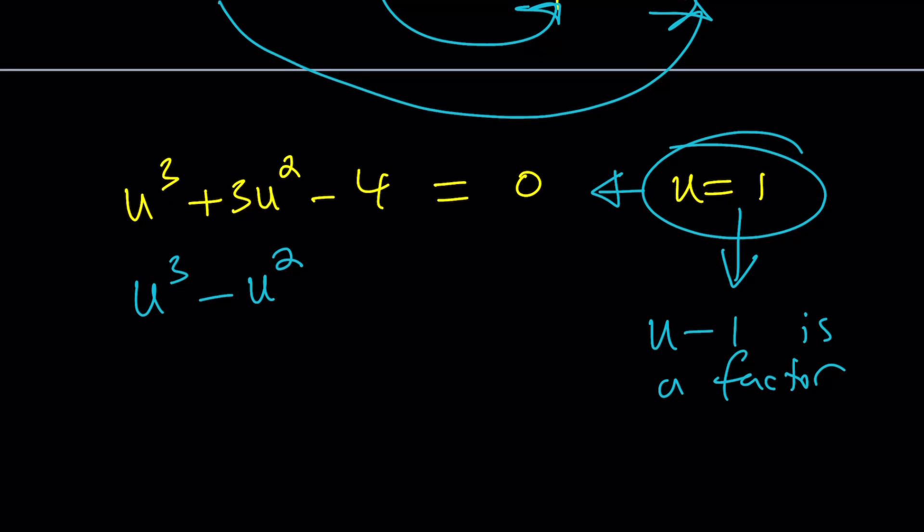u cubed is followed by 3u squared, but I want it to be followed by minus u squared, because in this case I can factor the u squared out and I get u minus 1, which means u minus 1 is 0 if u is equal to 1. Does that make sense? So the factor theorem tells us that if u equals 1 is a solution, then u minus 1 is a factor. If it's one of the factors, I'll try to make that happen. Make sense? Okay, so that's the whole idea behind this thing, and I'm going to continue.